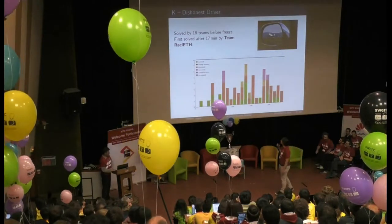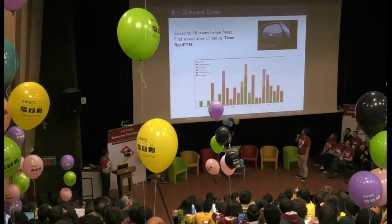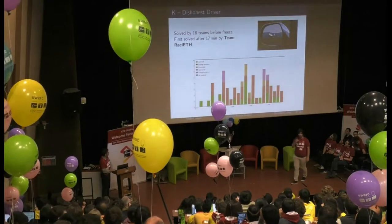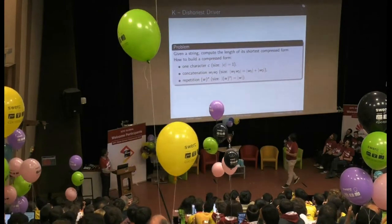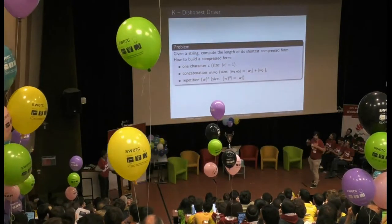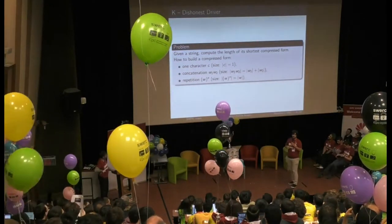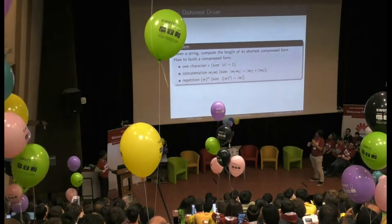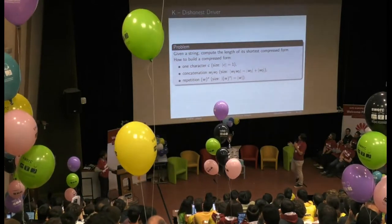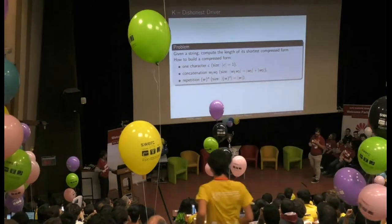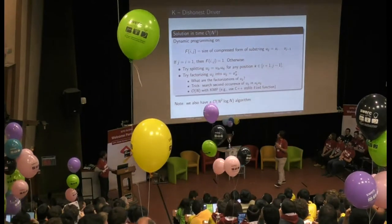The second problem solved was Dissonance Driver, 17 minutes after the start of the contest by team Timoraklet. It was solved by relatively few people — 18 teams. The idea of the problem was to compress a string given as input. The notion of compression described here was: a compressed string is either one character, the concatenation of two compressed strings, or the repetition of a compressed string a fixed number of times.